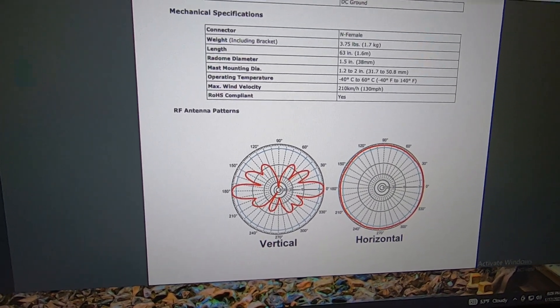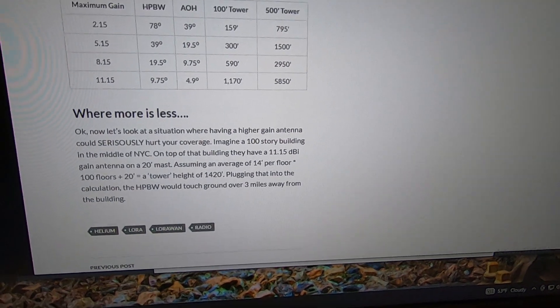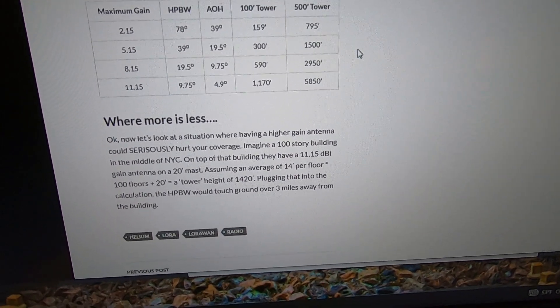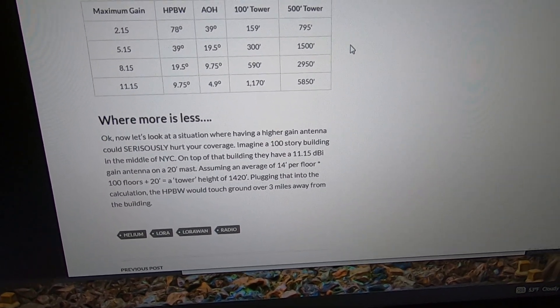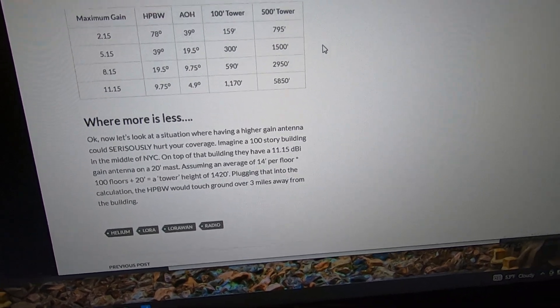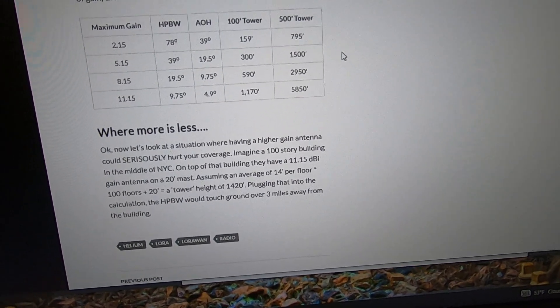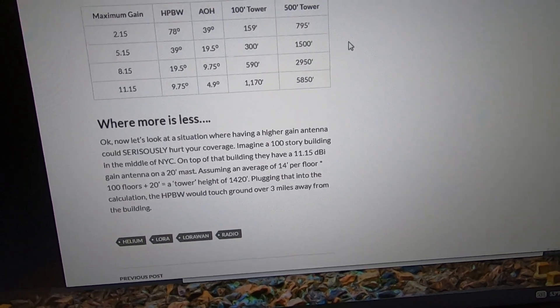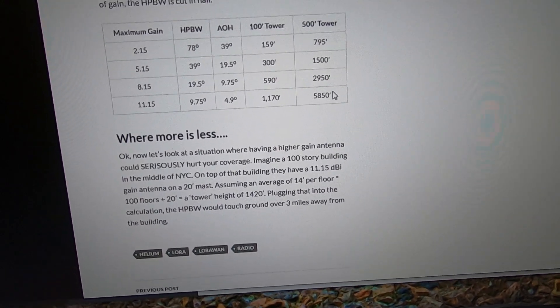Now the big problem with this, most of you aren't having 500 foot towers I can almost guarantee you. The big problem is going to come down to say you're on a mountain, a very sharp peak, that's 800 feet above sea level and you got a 500 foot tower on there.